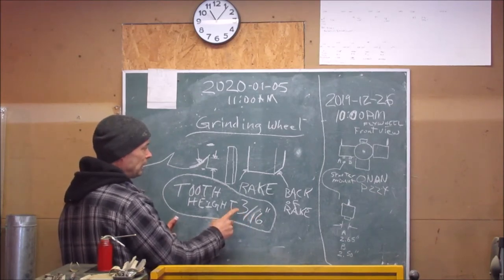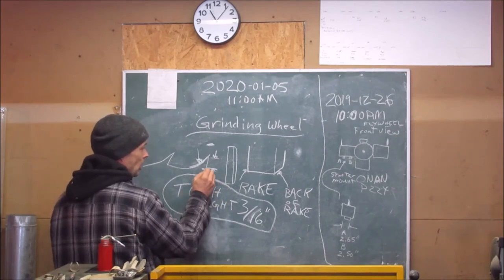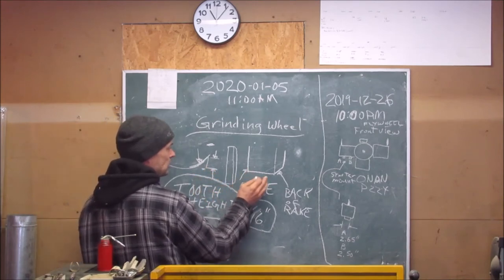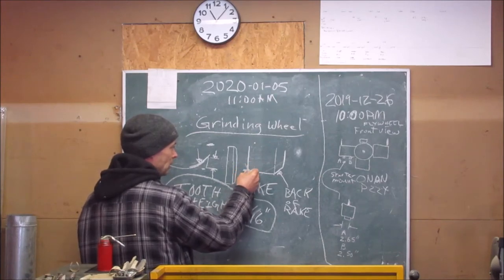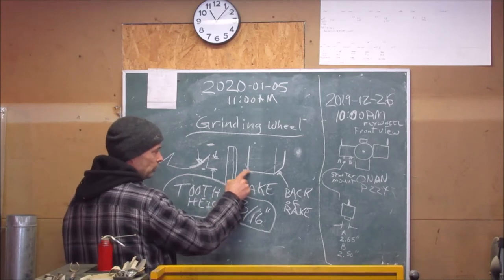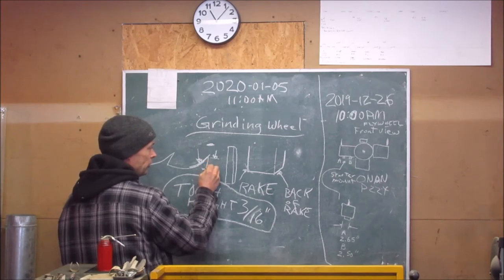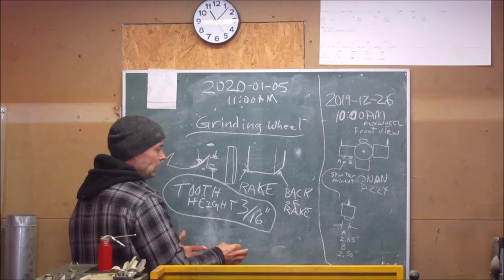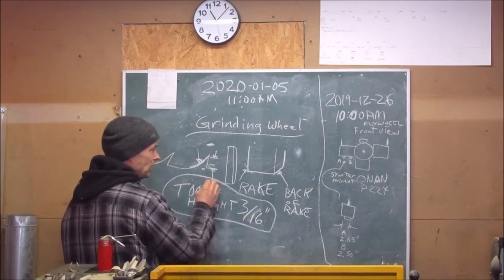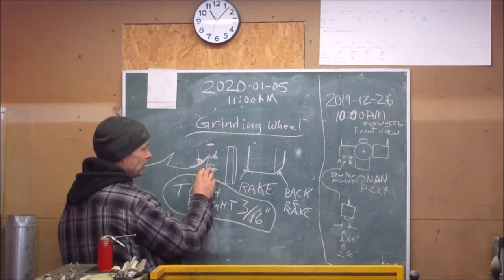That is the optimal tooth height. Now as you sharpen and you sharpen more and more, this side gets rounded off a bit. You'll know when to re-grind your wheel when you start seeing curvature here and the distance from here to here is no longer sufficient. It should be around three sixteenths of an inch, the tooth height from here to here.